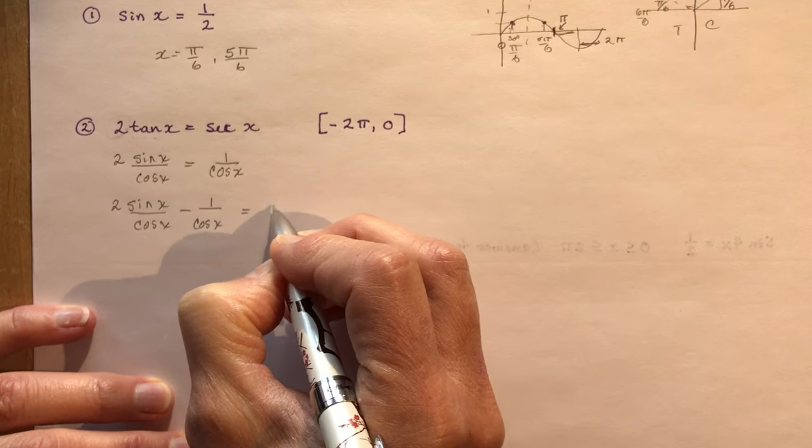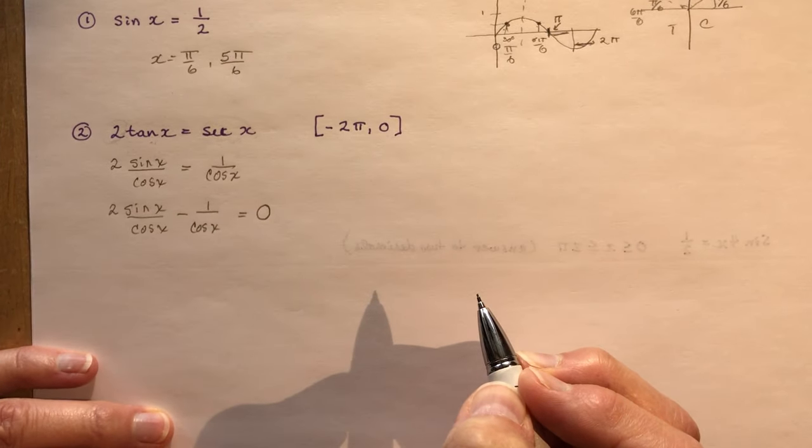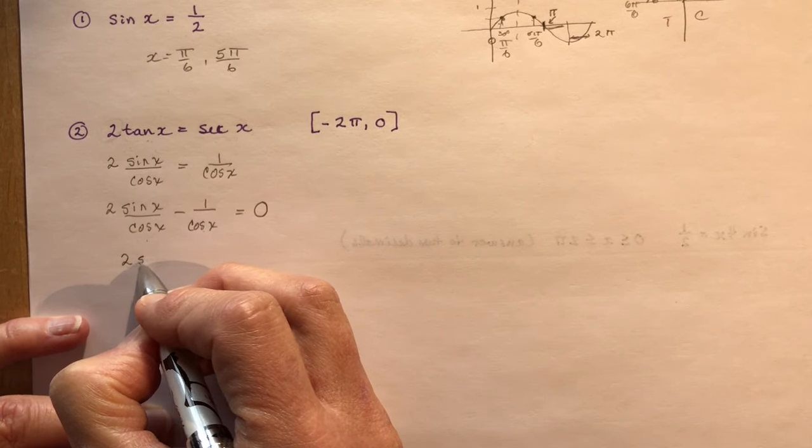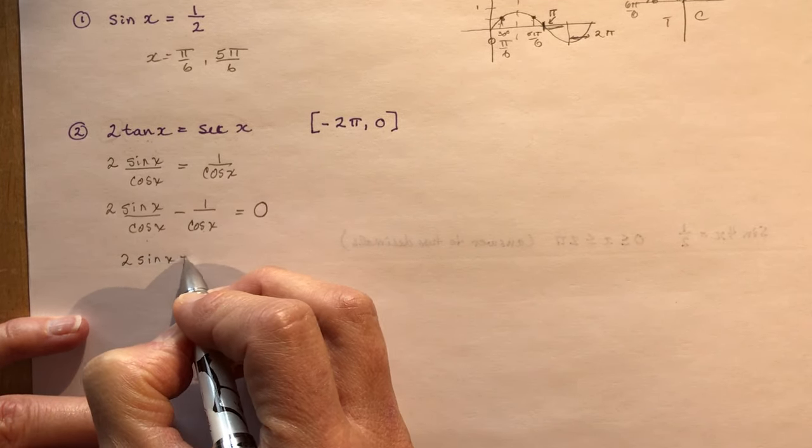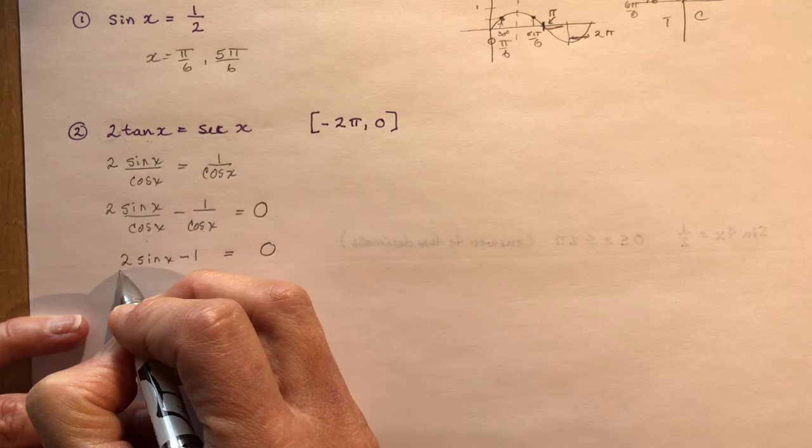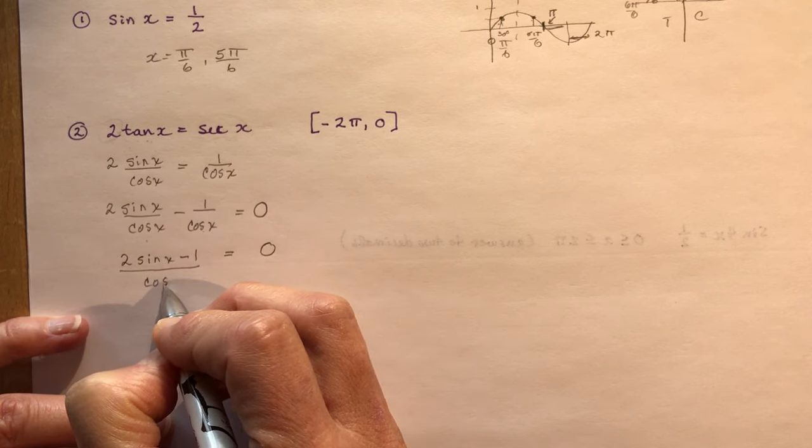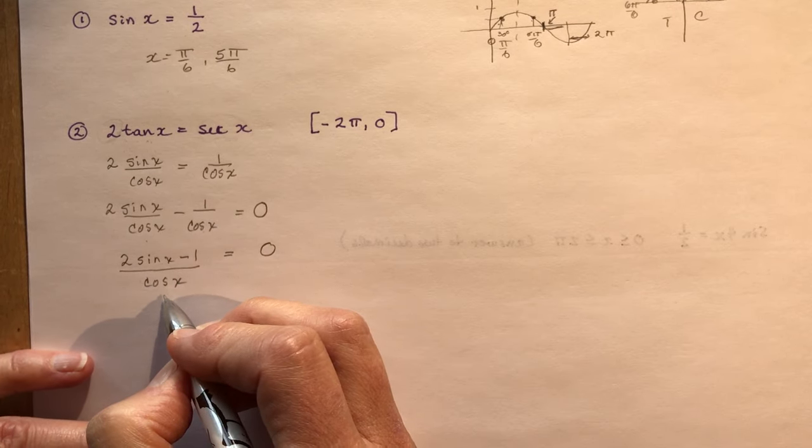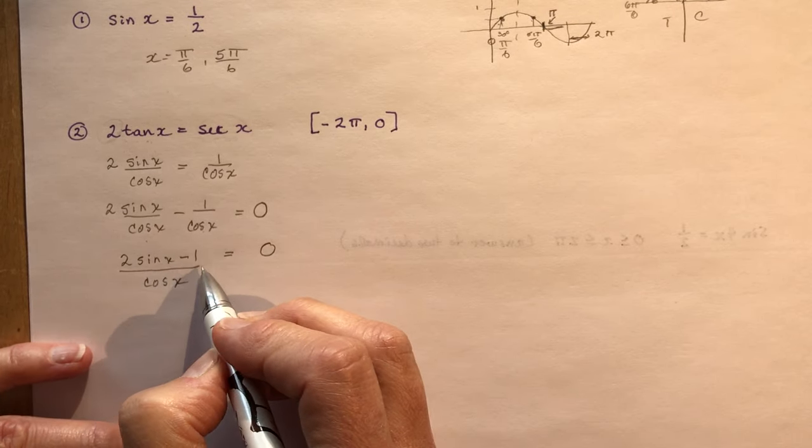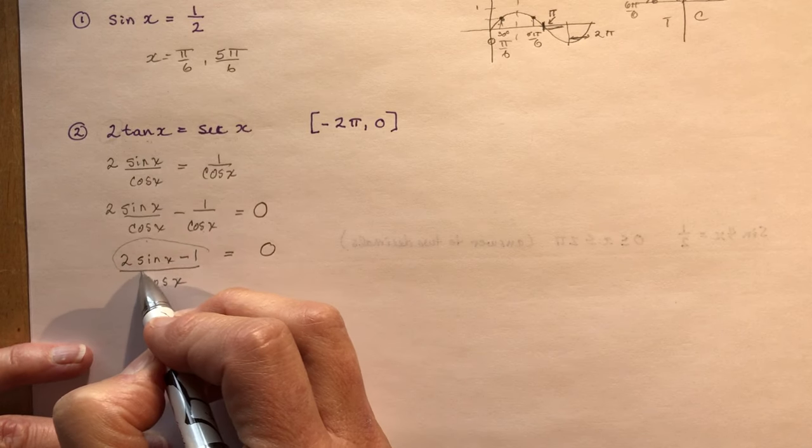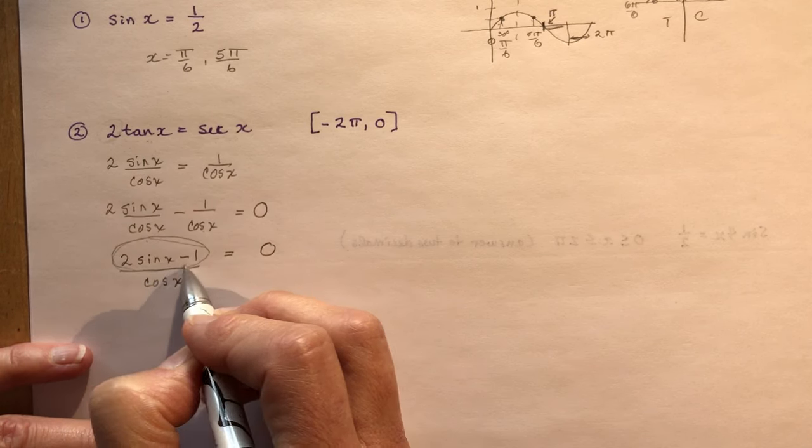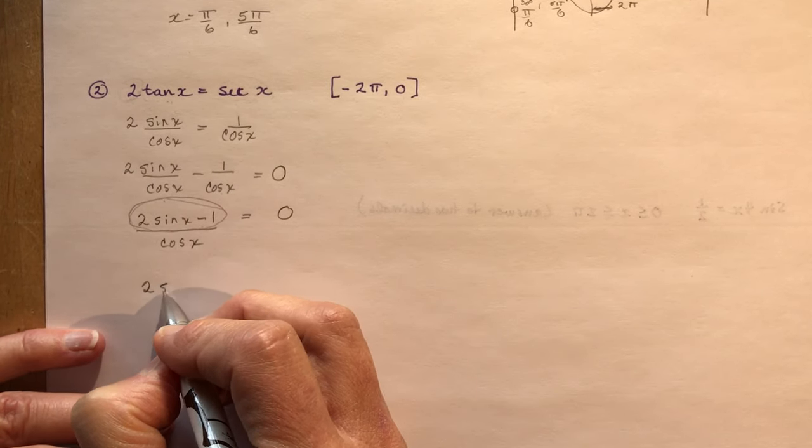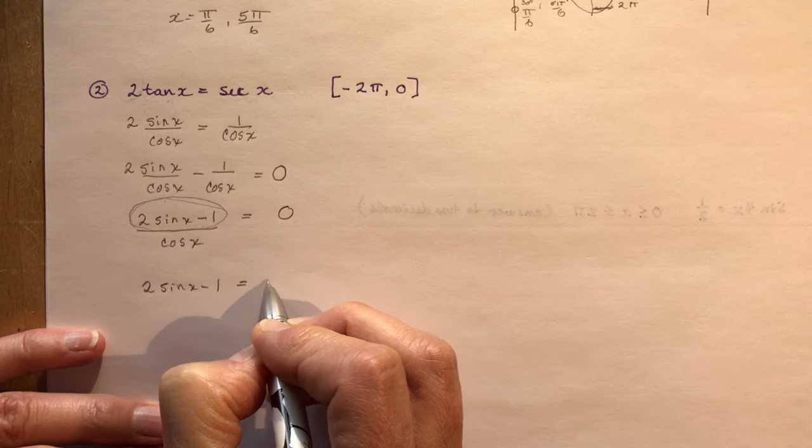Cos x, like that, right? So I moved it to the other side. And because the denominator is the same, that's the same as me writing 2 sin x minus 1 is equal to 0. Still over cos x. But this becomes unimportant when I'm solving an equation. Because as you know, the only way this could be equal to 0 is if the numerator is equal to 0. So that means all I have to do is solve 2 sin x minus 1 is equal to 0.